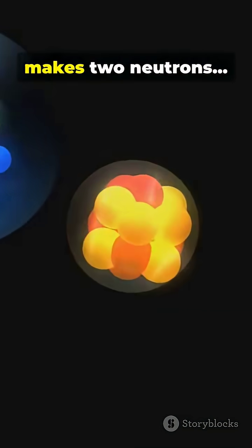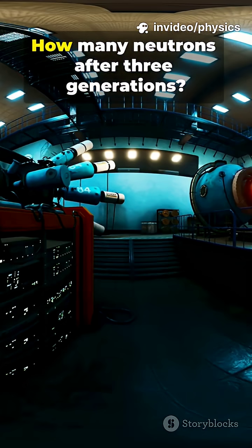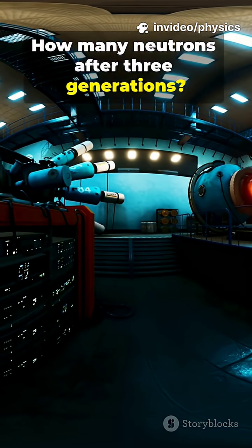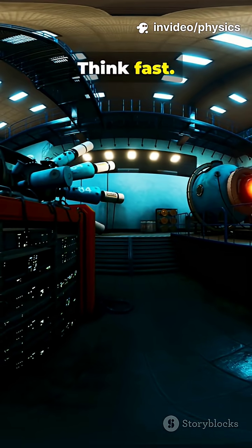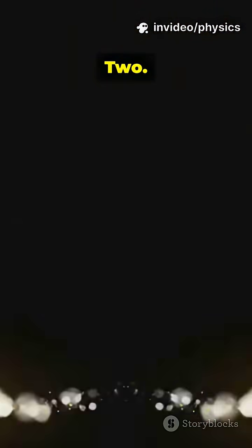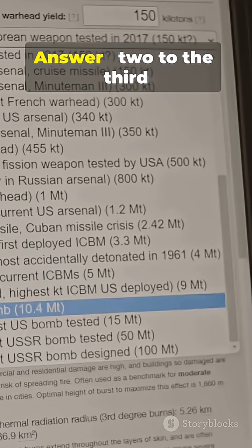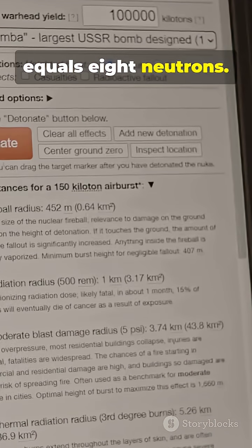Quick quiz: if each fission makes two neutrons, how many neutrons after three generations? Think fast. Answer in three, two, one. Answer: two to the third equals eight neutrons.